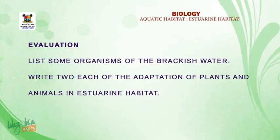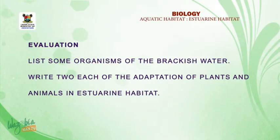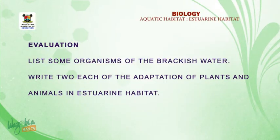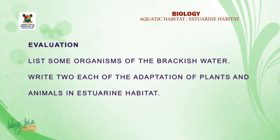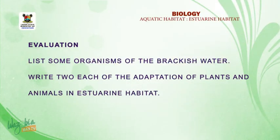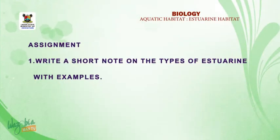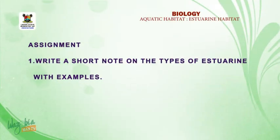Let's evaluate ourselves before we round up. List some organisms of brackish water — both plants and animals found in brackish water. Then describe the adaptations of plants and animals in estuarine habitats. Assignment: write a short note on the types of estuarine habitat with examples. Thank you.